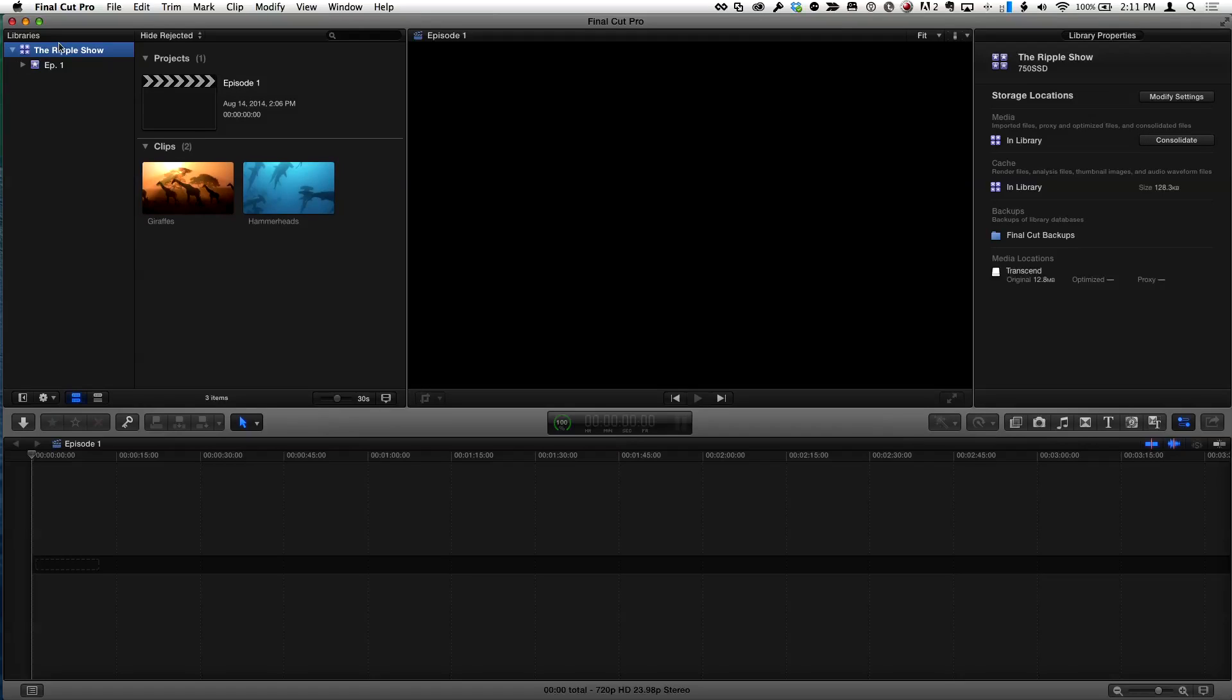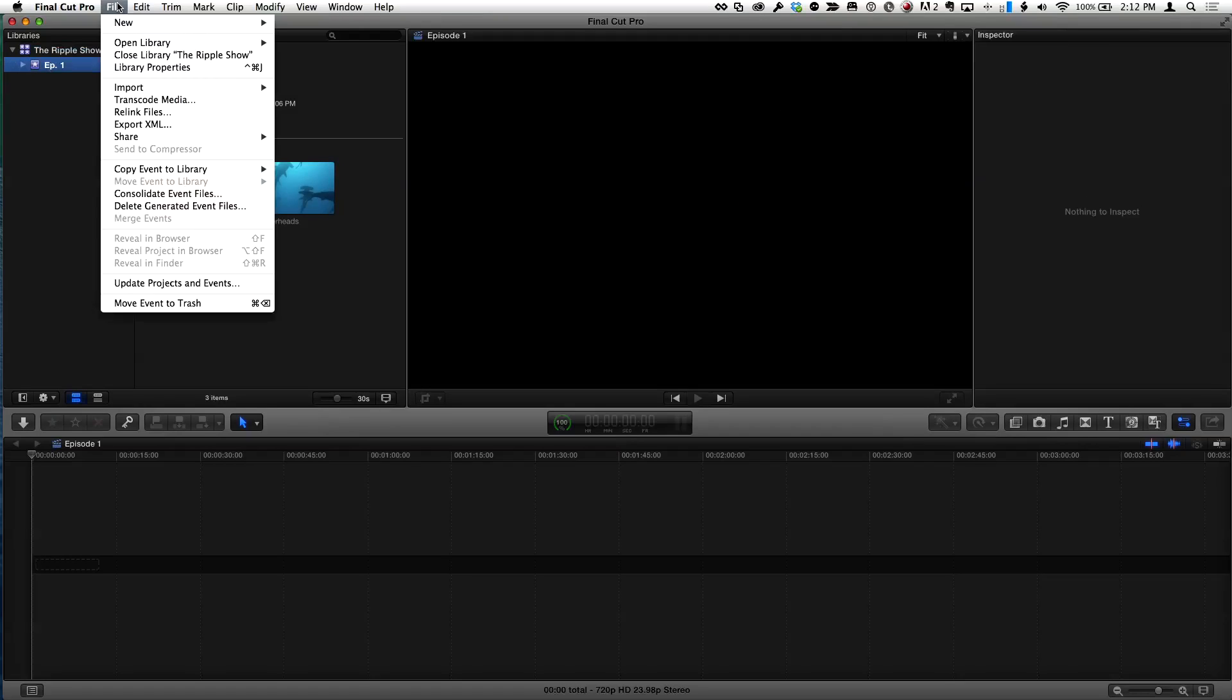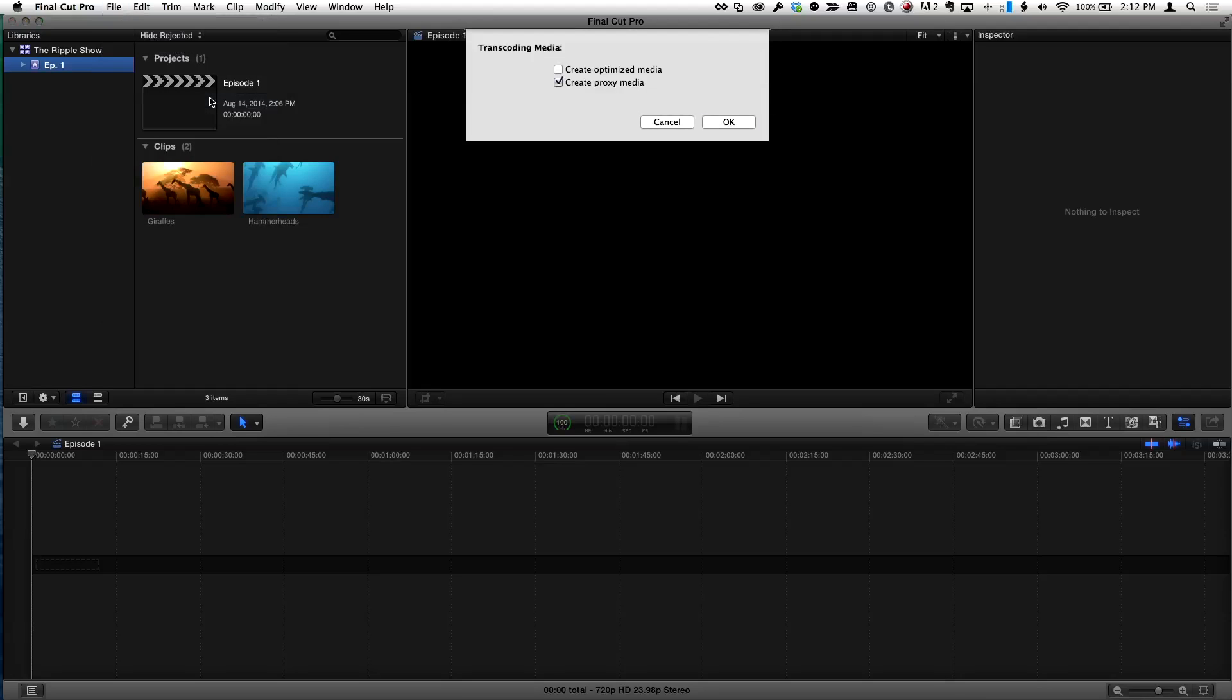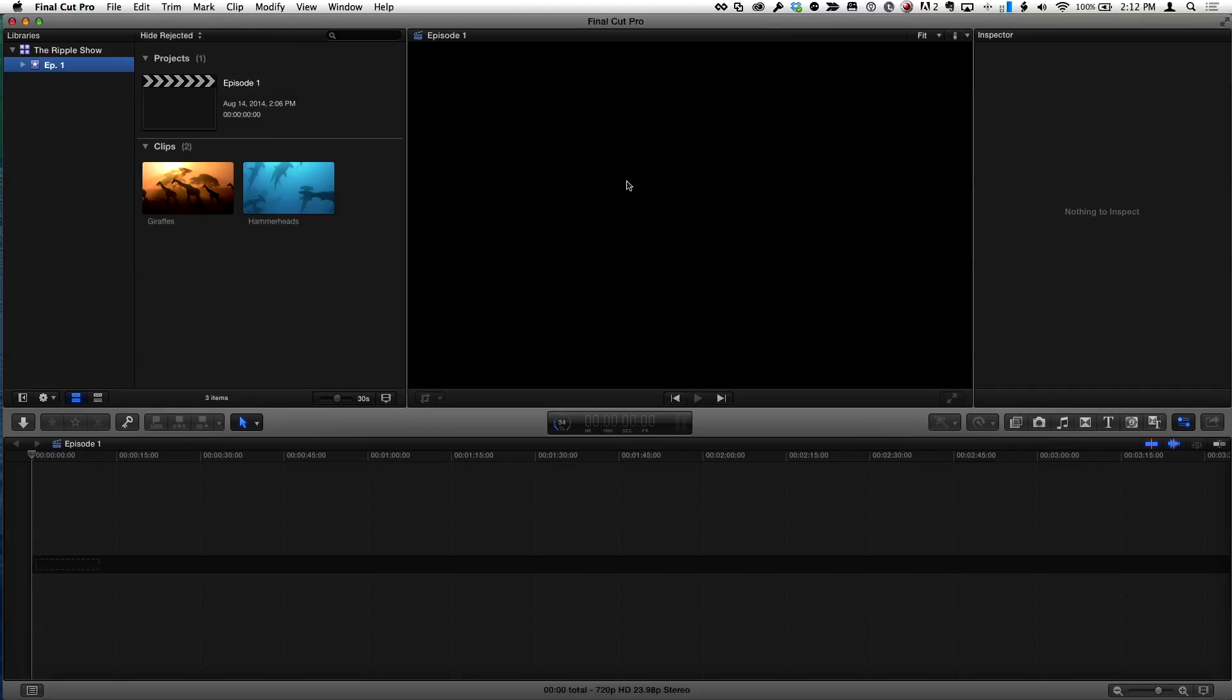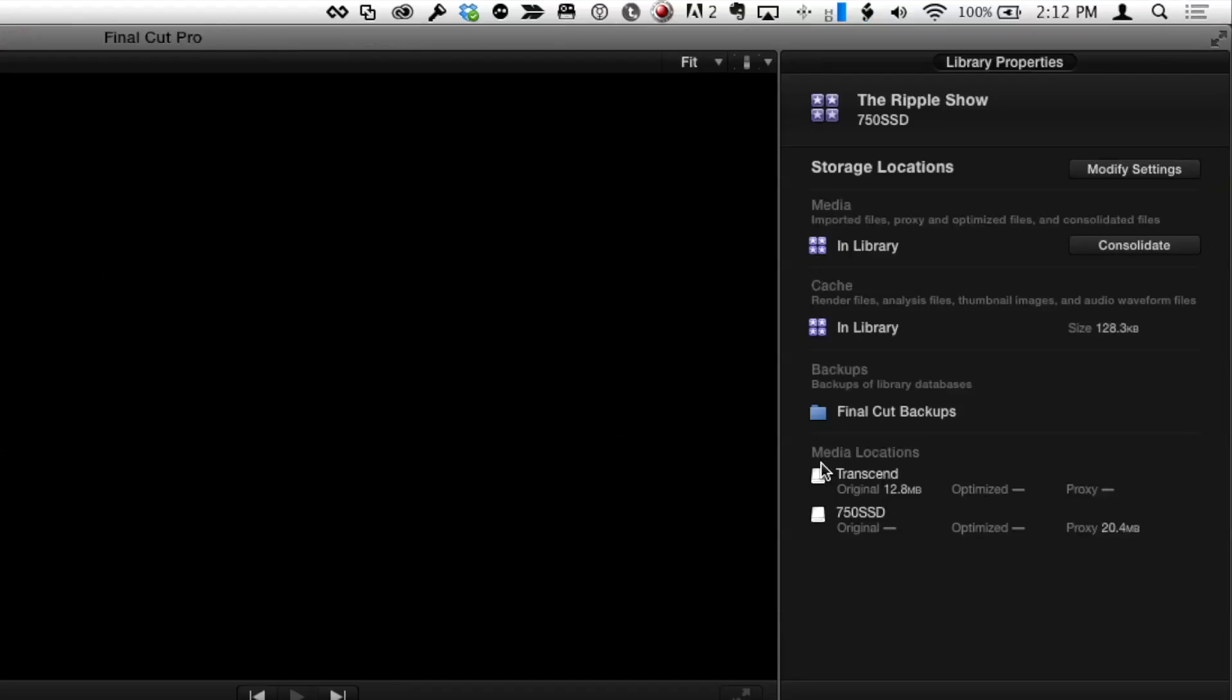In this case I'll choose in library, and then with the event selected I'll choose file, transcode media, and select create proxy media. Now if I go back and select the library and return to the library inspector, we can see in our media locations that my original media is on that external Transcend drive but my proxy media is right here on my internal drive.